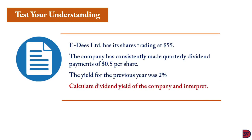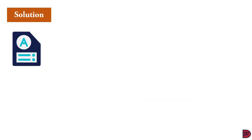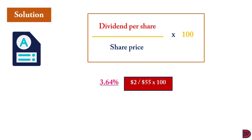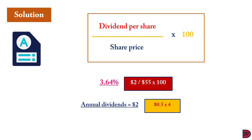Edis Limited has its shares trading at 55 dollars. The company has consistently made quarterly dividend payments of 50 cents per share, and the dividend yield for the previous year was 2%. We need to calculate the dividend yield and interpret the result. Restating the formula — dividend per share divided by share price multiplied by 100 — we get a dividend yield of 3.64%, which is higher than the previous year's 2%. We obtained 3.64% by dividing the annual dividend per share of 2 dollars by the share price of 55 dollars, multiplied by 100.